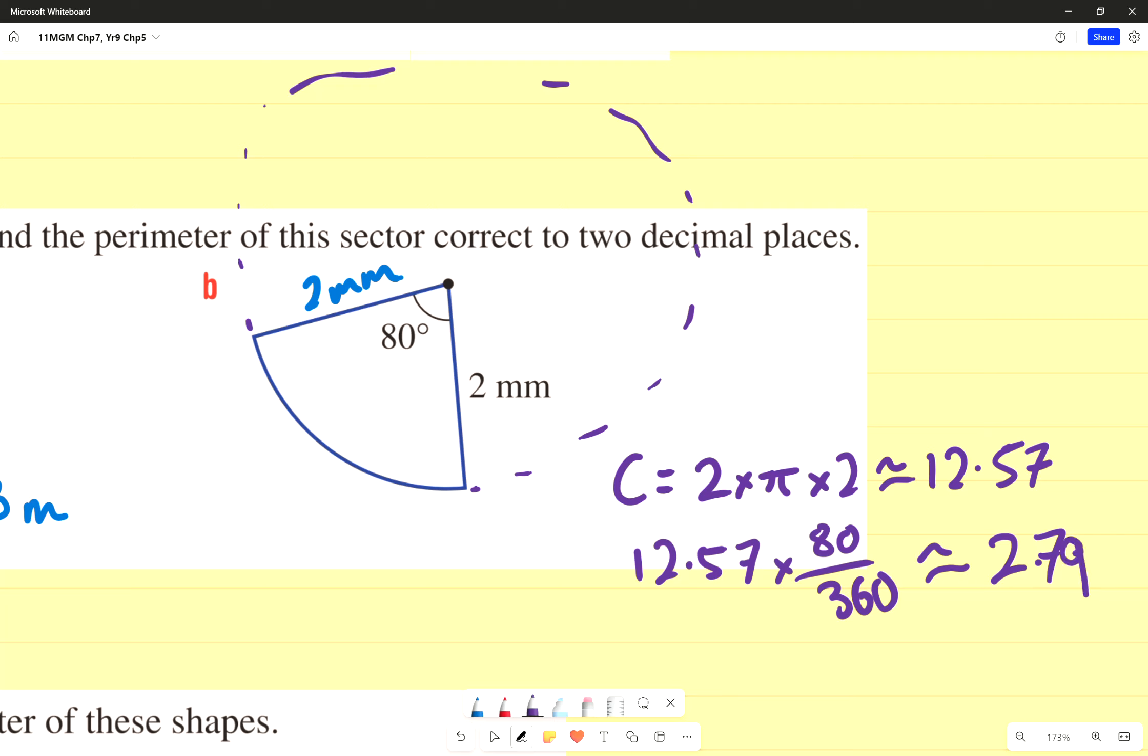So times 80 divided by 360 gives me 2.79. Approximately 2.79. Getting your own this down, yes? Good. So we found the distance from here to here. Does that look about right? Does that look about right, yeah? I'm assuming that's what that means, yeah? Okay. 2.79 looks about right.